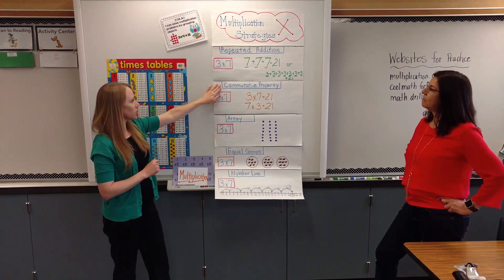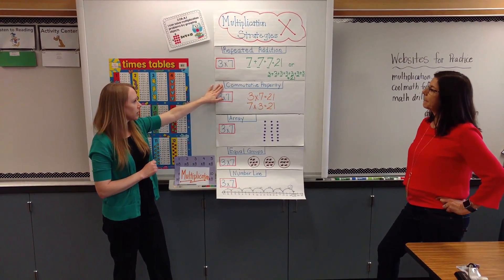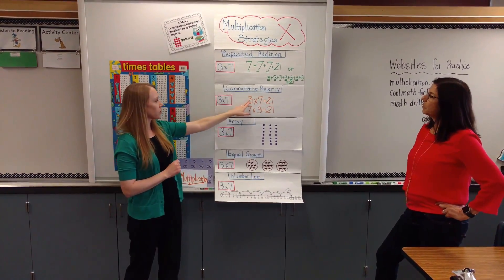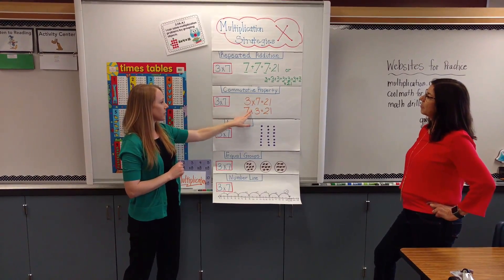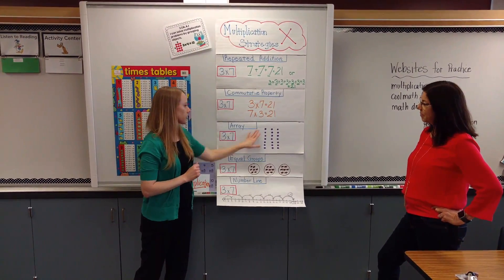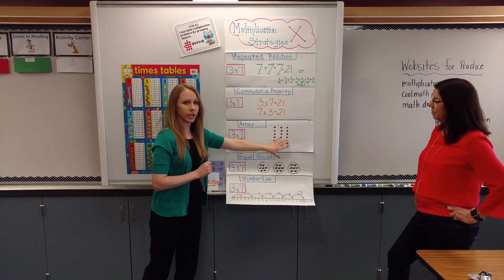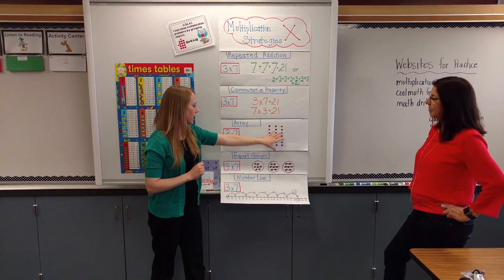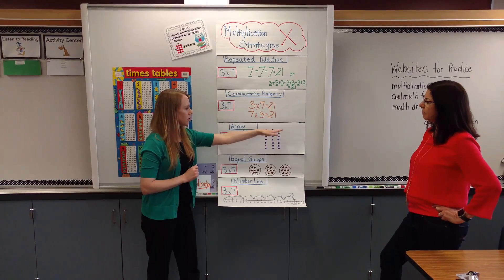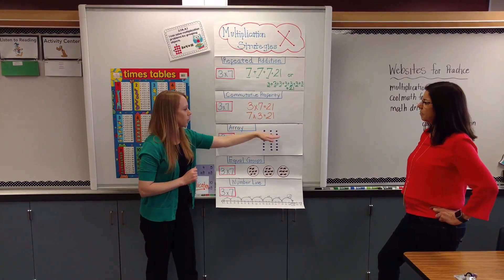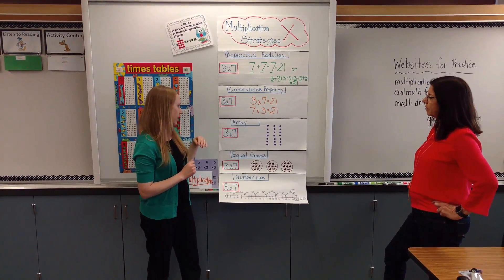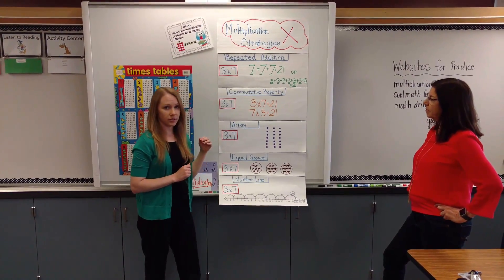We also teach them the commutative property, which is just reversing the factors. So 3 times 7 and 7 times 3 are still 21. For our visual learners, arrays are very helpful to see the 21 dots. Here we have 3 columns and 7 rows, which equals 21. You can also do the reverse and have 3 rows of 7.